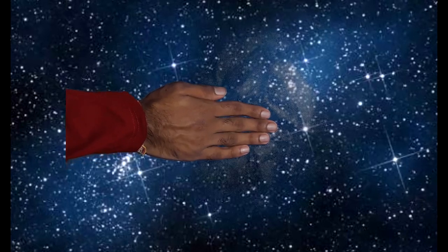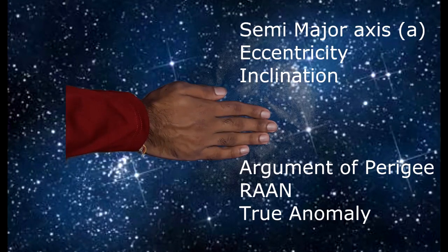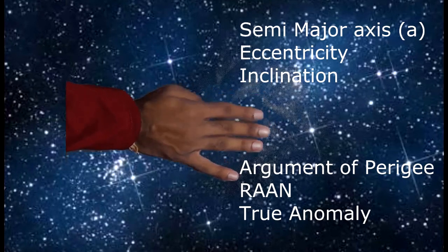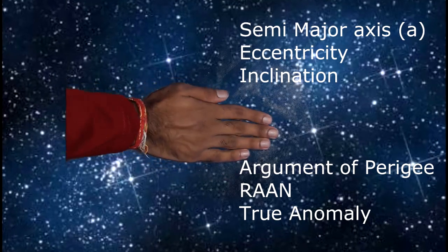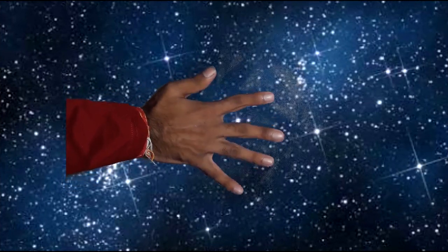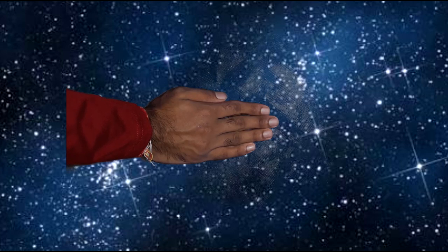So let us discuss about the orbital parameters. In orbital parameters, we have six of them: the semi-major axis, the eccentricity, inclination, RAAN, argument of perigee, and true anomaly. Semi-major axis basically decides the size of the orbit — how big your orbit is, that will be decided by the semi-major axis. Eccentricity tells you the degree of how much a particular orbit is elliptical or how much it is circular. Next comes argument of perigee, inclination, and RAAN, which is what we are going to focus on now.